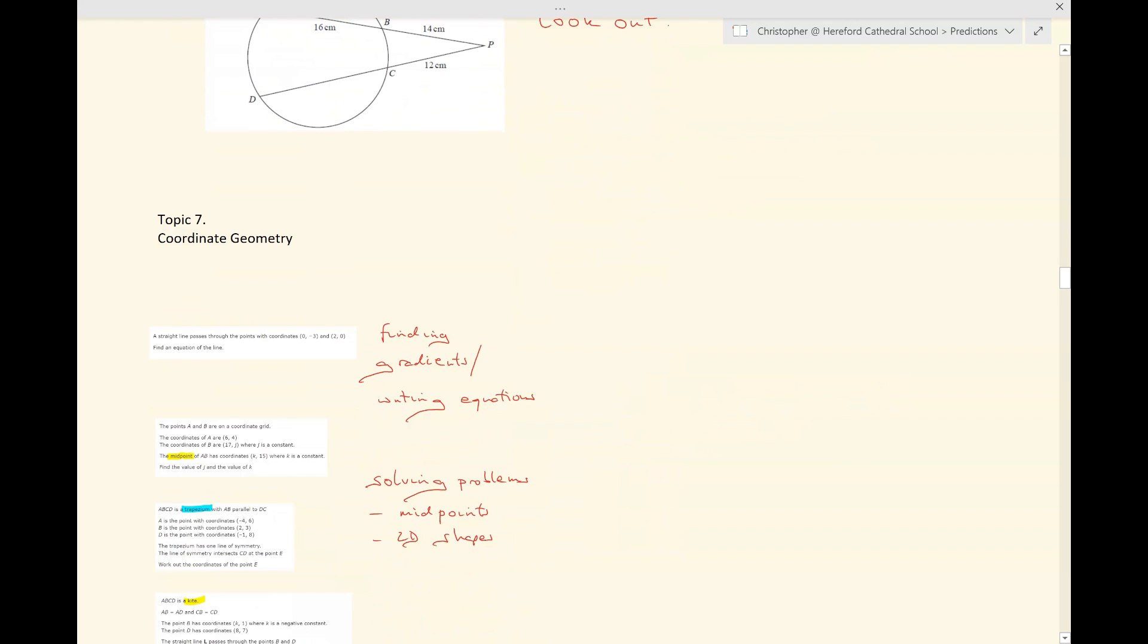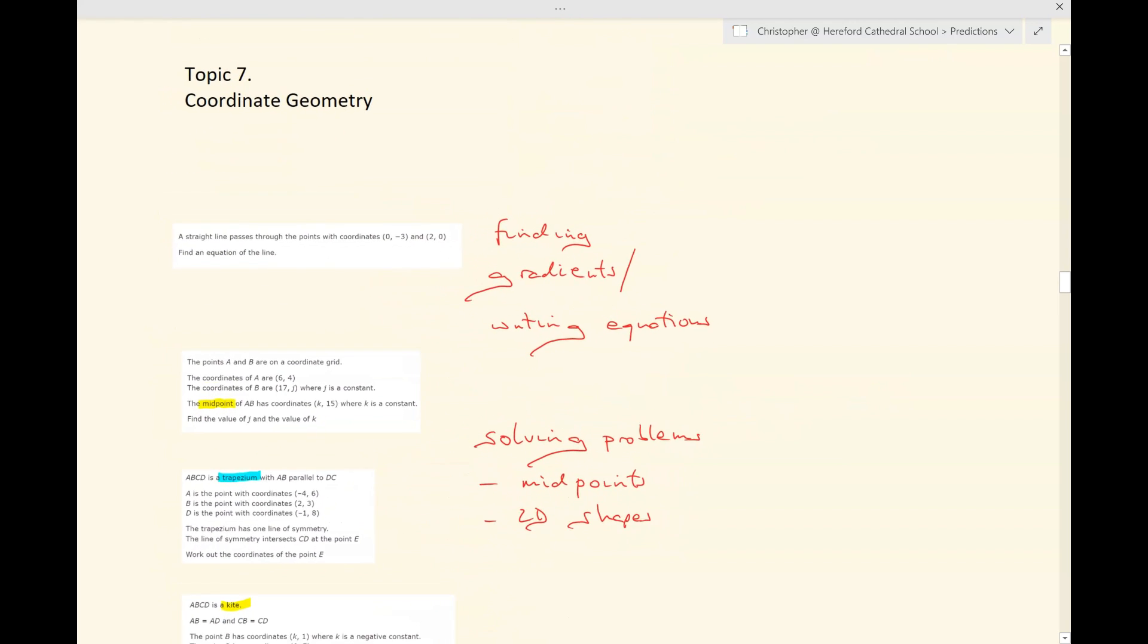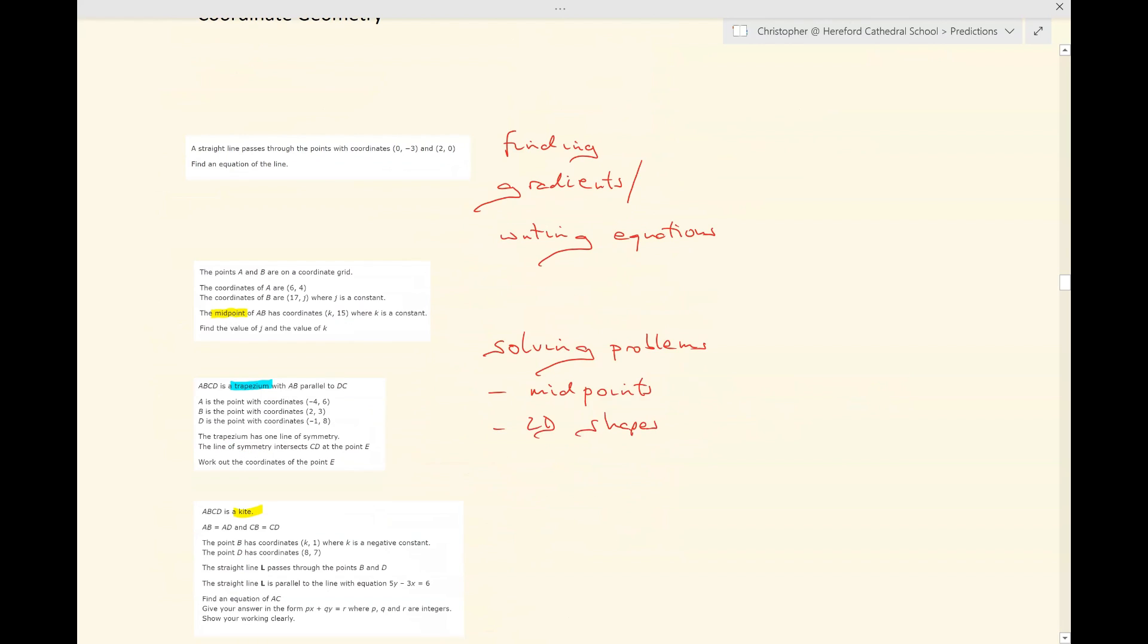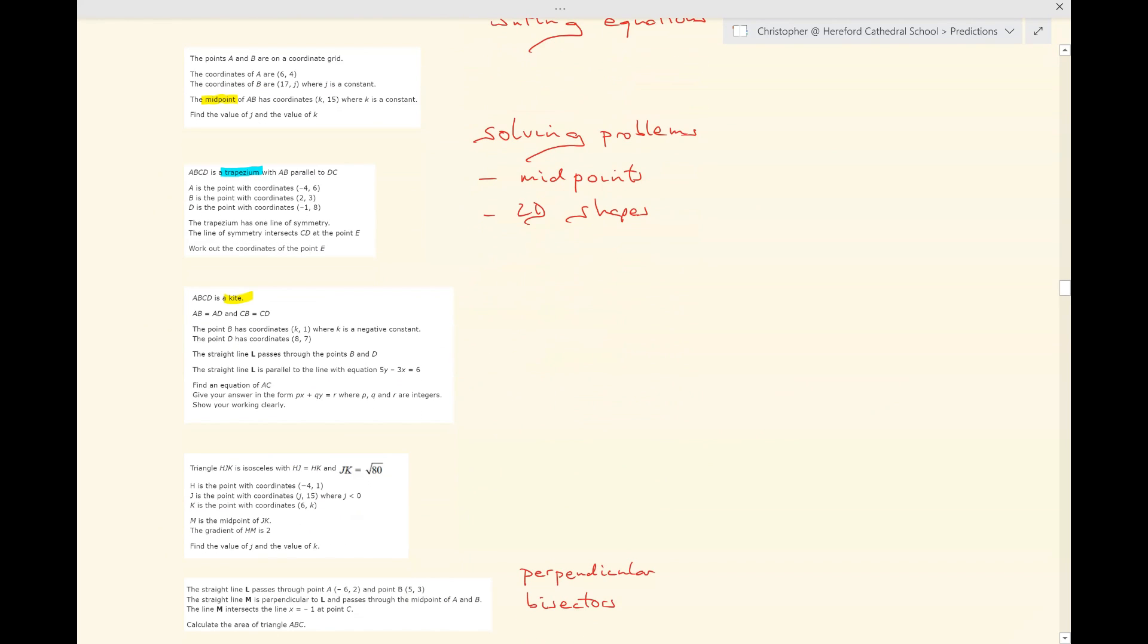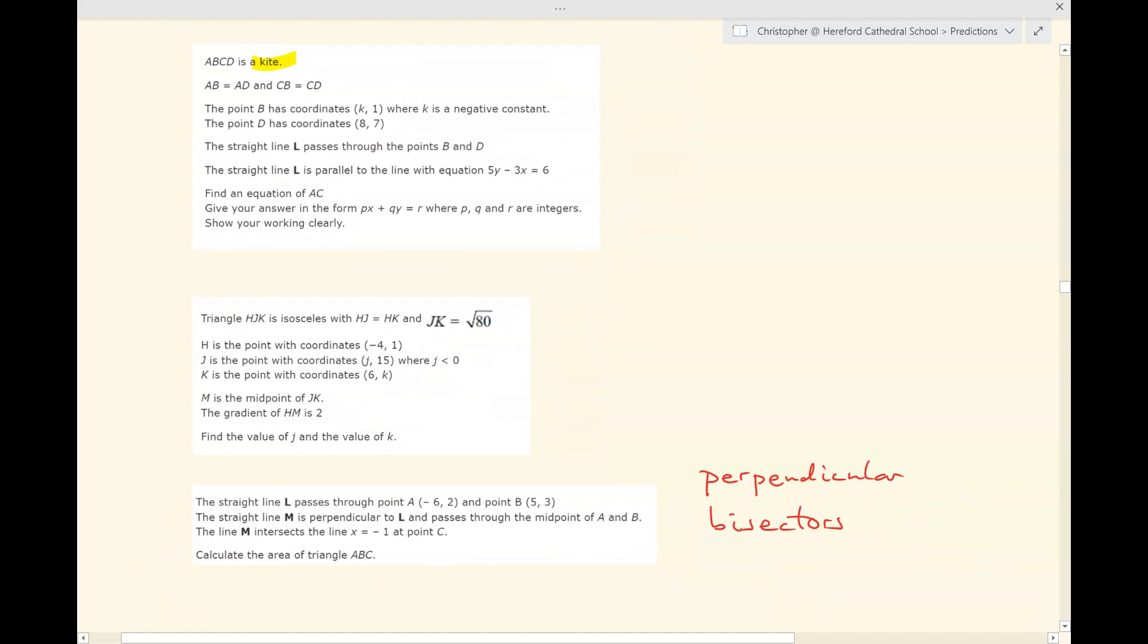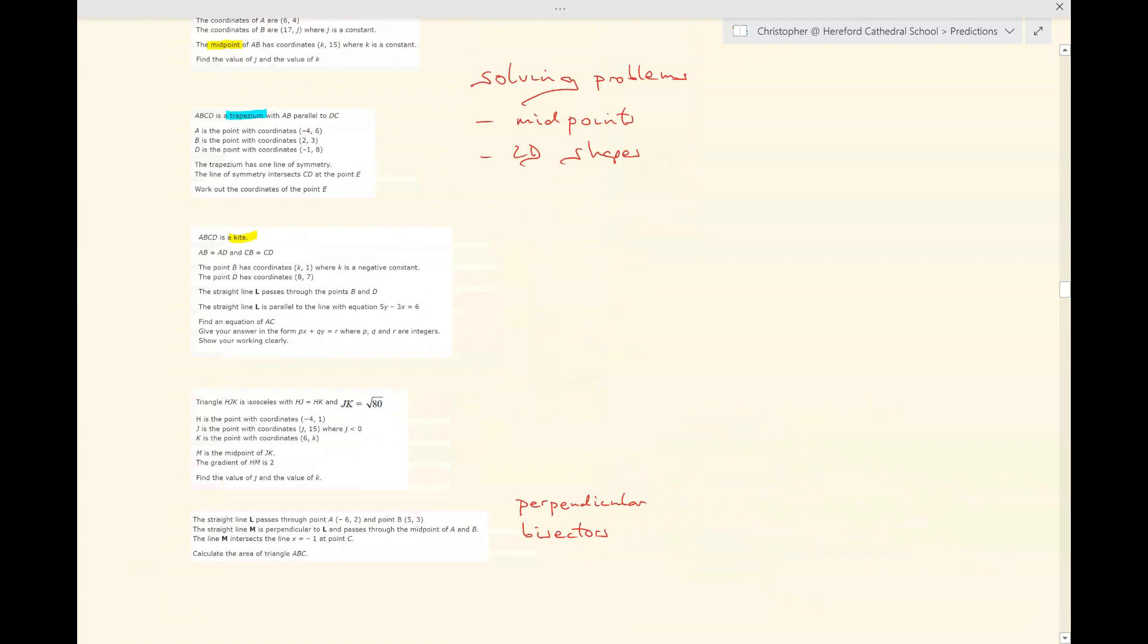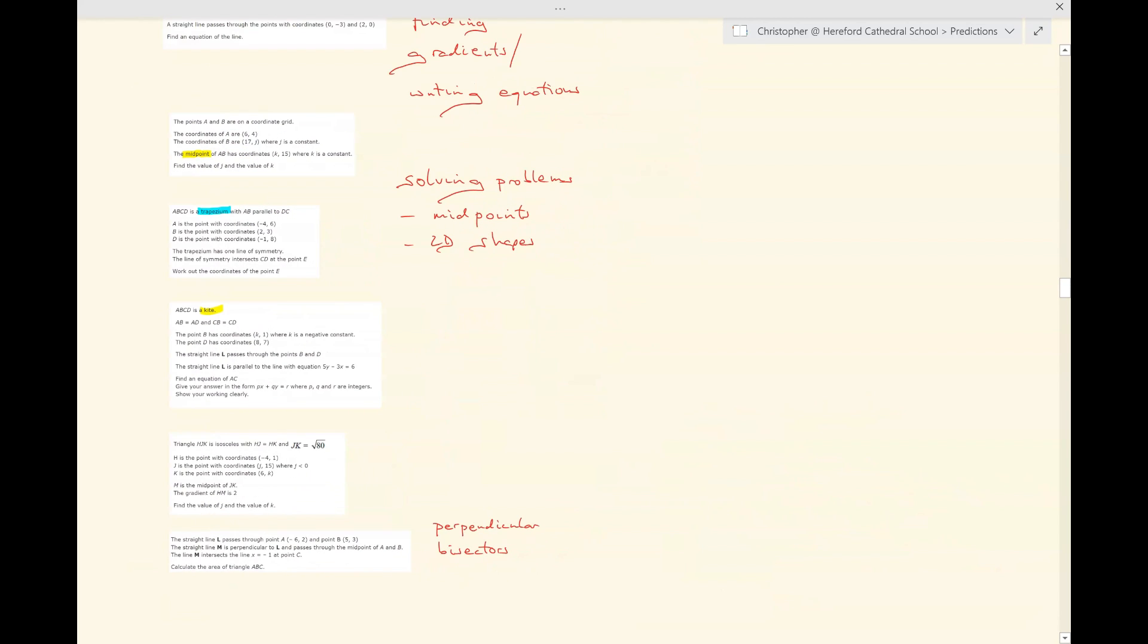Coordinate geometry. This is a very broad topic. The sort of things you need to know how to do before you can start are finding gradients and writing the equations of lines if you have the gradient and you have a point on the line. And then, having established that bit of prior knowledge, the examiners can ask you lots of questions involving midpoints or involving 2D shapes. Here are questions involving trapeziums and kites. And here's another question involving midpoints and gradients. And also, they could ask you to find equations of perpendicular bisectors and have to use those equations to answer more complex problems, such as this one at the bottom, where you have to find the area of a triangle.